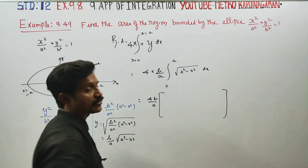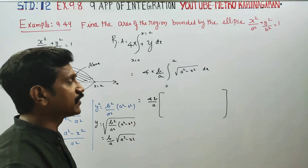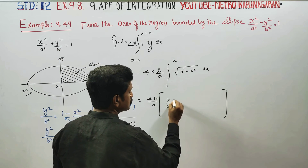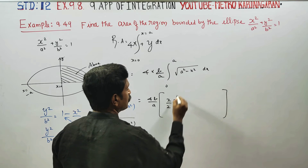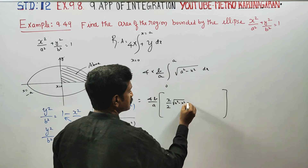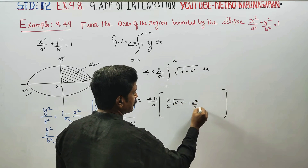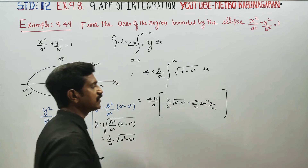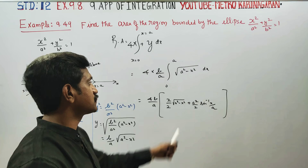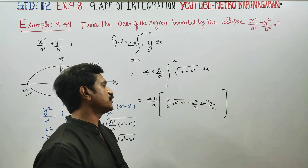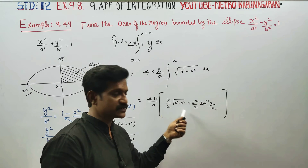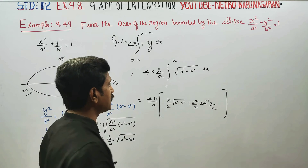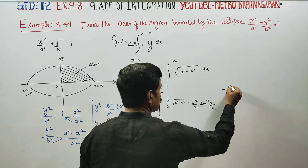The integration of √(a² − x²) uses the readymade formula: ∫√(a² − x²) dx = (x/2)√(a² − x²) + (a²/2) sin⁻¹(x/a) + C. Applying this formula with limits 0 to a, the expression becomes (4b/a) × [(x/2)√(a² − x²) + (a²/2) sin⁻¹(x/a)] from 0 to a.